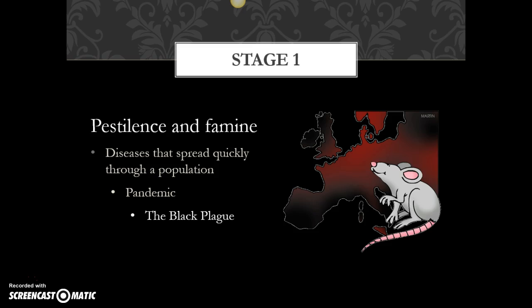Stage one — this is really pestilence and famine. These are diseases that spread quickly through a population, oftentimes because that population is otherwise weakened. A lot of times these are pandemic diseases, like the Black Plague that swept through Europe with such large devastation, particularly during the Middle Ages. Statistics show anywhere from roughly a third to half of Europe dying as a result of the Black Plague.